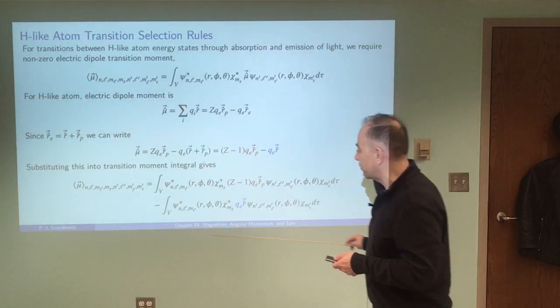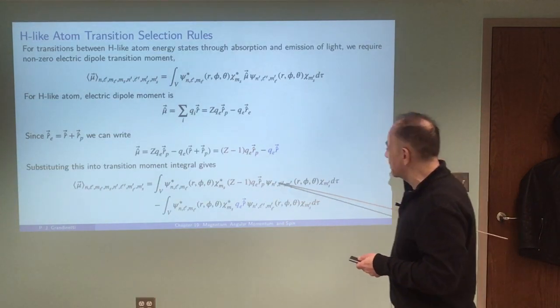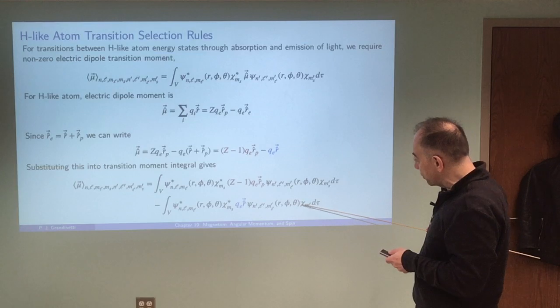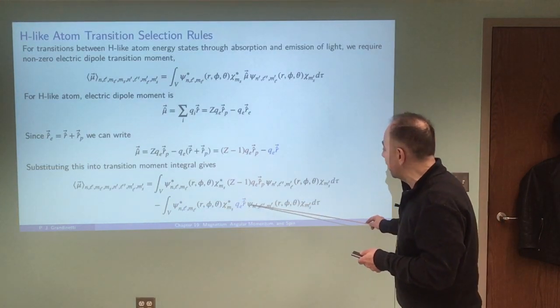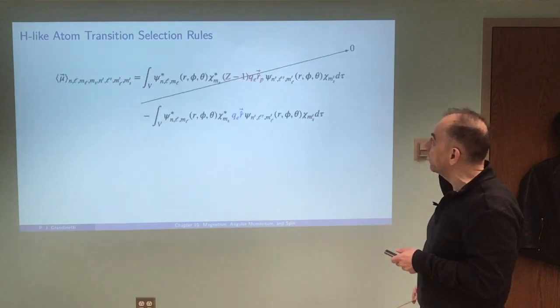None of these guys are going to operate on the electronic wave function for the hydrogen atom, so this will just sort of slide out of this integral and just leave you with the product of the two wave functions. Whereas this term down here is going to require us to operate on the wave functions before we can evaluate that integrand.